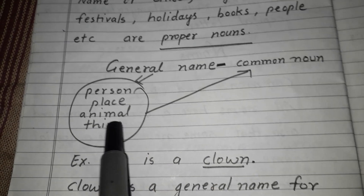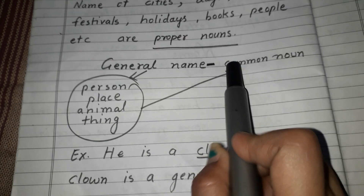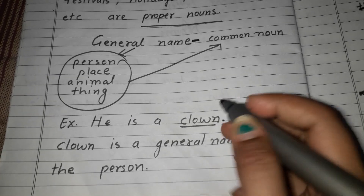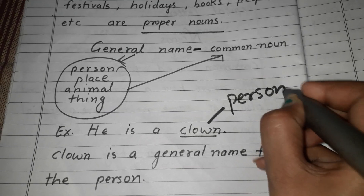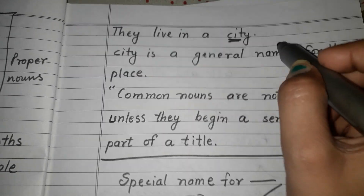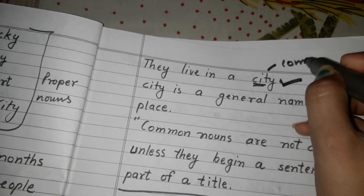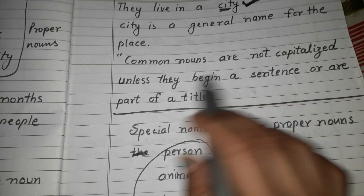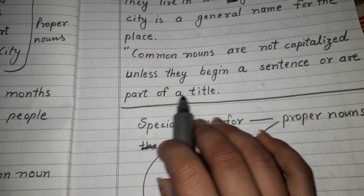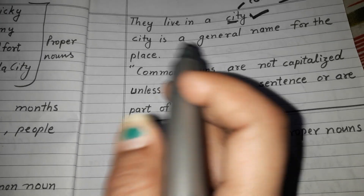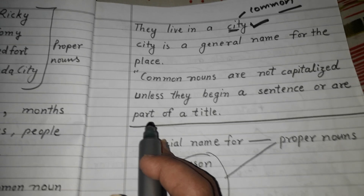When a name is general — for a person, place, animal, or thing — it is a common noun. For example: 'He is a clown.' Clown is a general name for the person. 'They live in a city' — city is a general name for the place, so it is a common noun. Common nouns are not capitalized unless they begin a sentence or are part of a title.